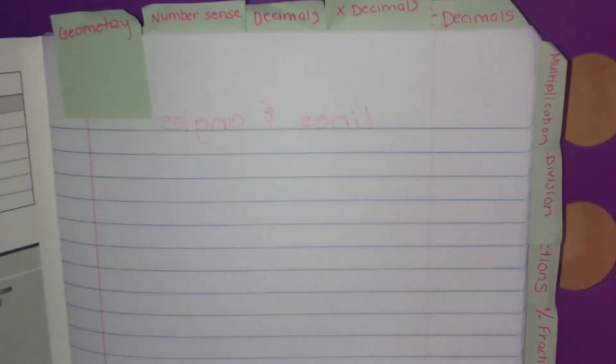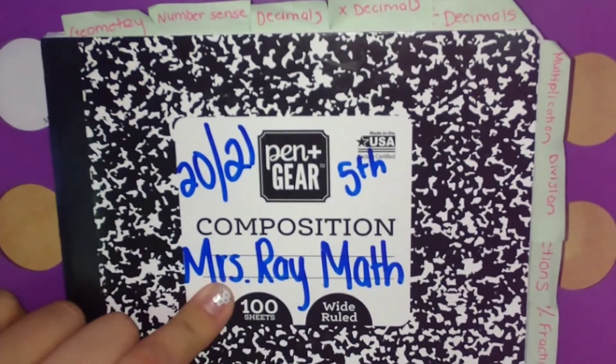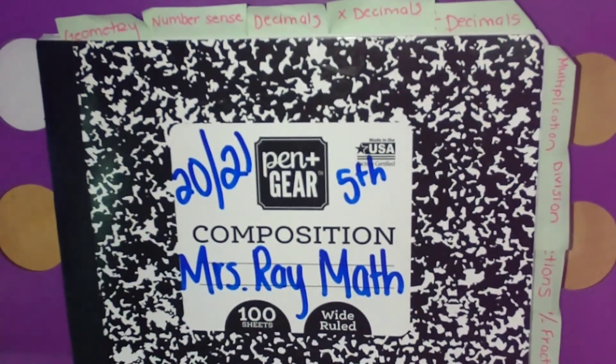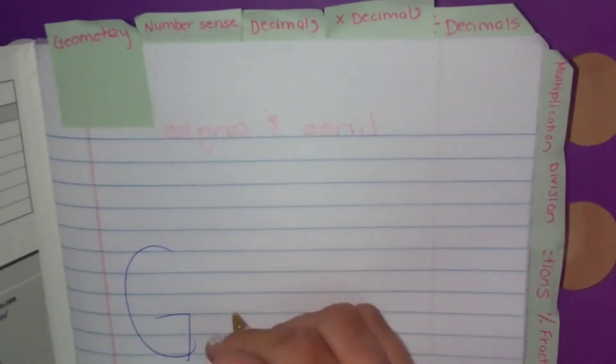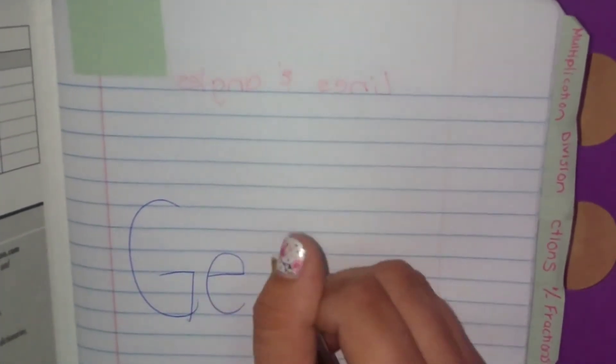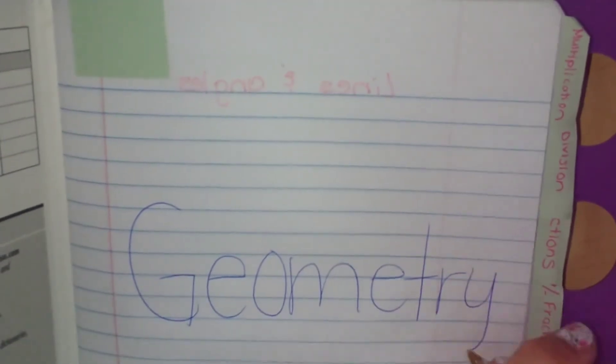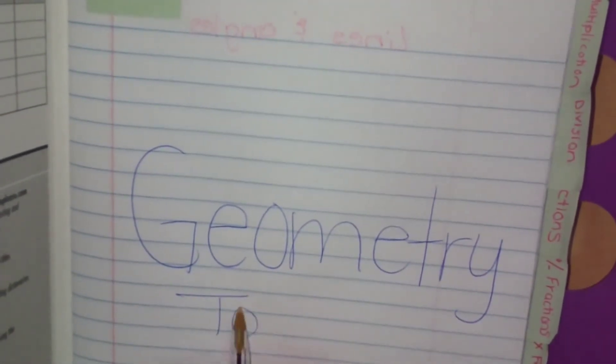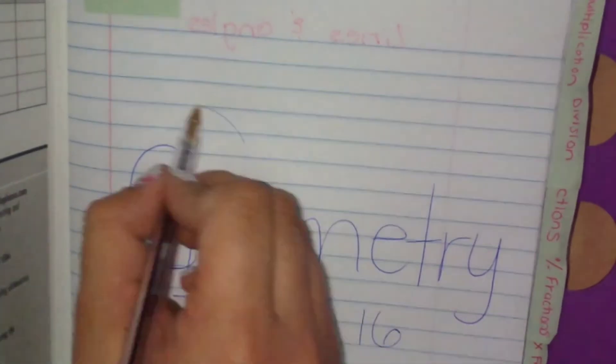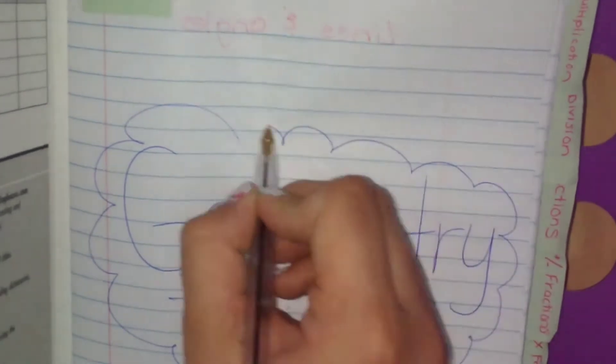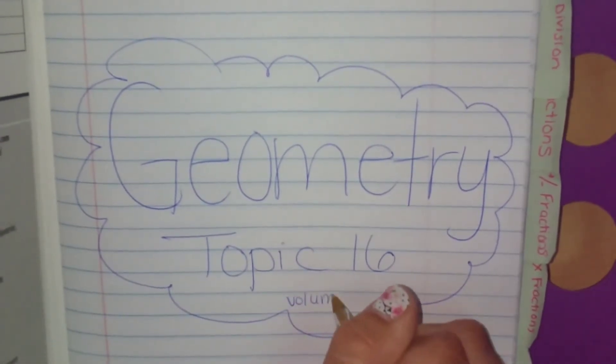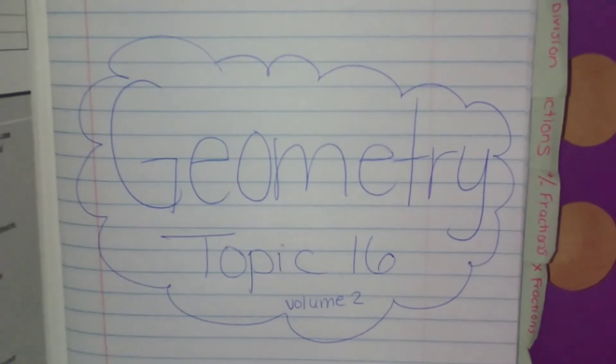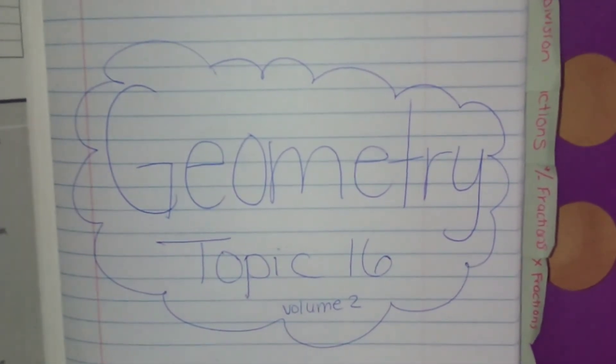So I'm going to write on the front, geometry. Also don't forget in your notebook to write that this is your math notebook. The hundred-page ones work the best just so we have enough. So I'm writing G-E-O-M-E-T-R-Y. And this is going to be topic 16. We're actually going to be starting with the last topic in your book, so you're going to be wanting to work in volume two to start. It's kind of silly. I know it doesn't make sense, but that's what we're going to start with.